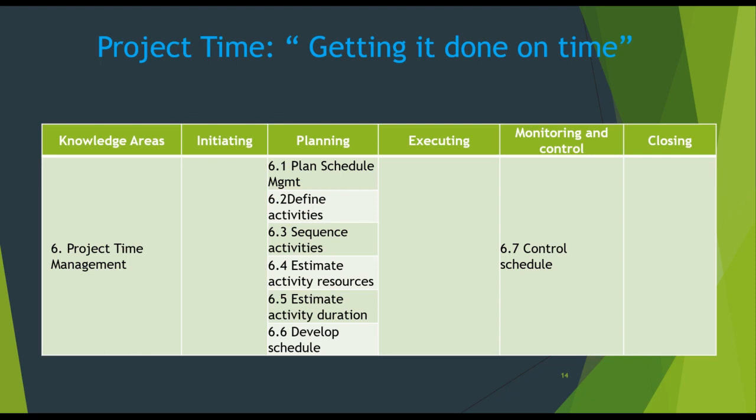There were actually six processes, but estimate activity resources was included with the sixth edition. Before, it was: plan schedule management, define activities, sequence activities, estimate activity duration — but now estimate activity resources and estimate activity duration are both included.